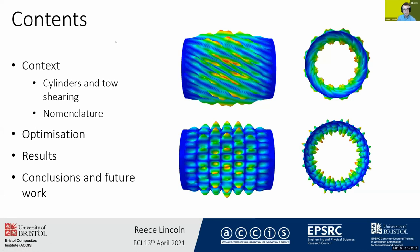Hi, my name is Reese. I'm going to give a quick presentation on my optimization of some CTS — continuous tow shear cylinders — with realistic imperfections. The structure of the presentation is broadly based around looking at how we define these structures and then looking at the optimization I performed to get these cylinders to show better properties than straight fiber counterparts.